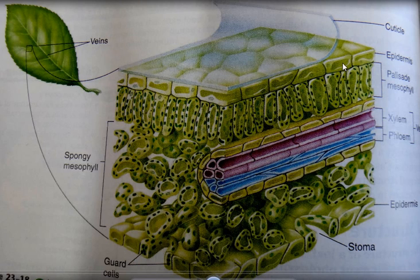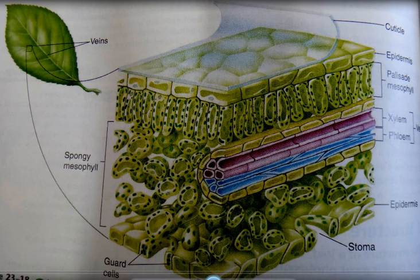Let's talk about the first layer — this is the cuticle. The cuticle is a structure made of a waxy substance, and it protects the leaf against the loss of water. You can see that we have epidermis under the cuticle, and you have two epidermis: the upper epidermis and the lower epidermis. The lower epidermis lacks the cuticle.